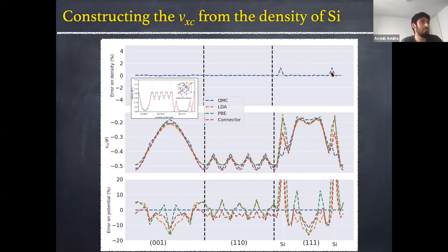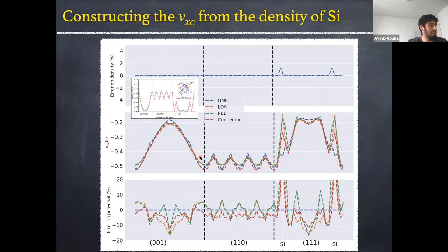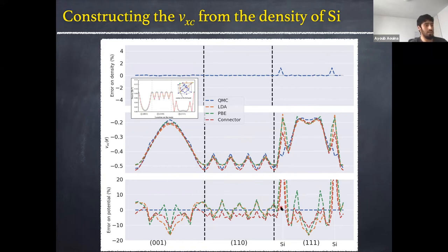Here we have a comparison between the QMC VXC, LDA, PBE, and the connector. A general remark is that they are all almost the same. But looking at the percentage error, we can see some differences where the density is very low. PBE and LDA are almost the same in the high-density region. In general, the connector is performing quite well compared to PBE and LDA, which is not surprising because it yields the most accurate density approximation for silicon.